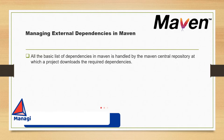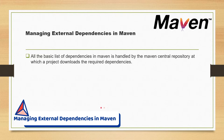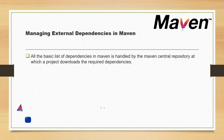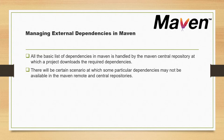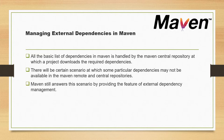In those cases, we need to explicitly specify those dependencies in pom.xml. The key point is that all the basic list of dependencies in Maven is handled by the Maven Central Repository, from which the project downloads the required dependency. Most dependencies are downloaded from the central repository, but certain dependencies may not be available there. Maven addresses this scenario by providing the feature of external dependency management.